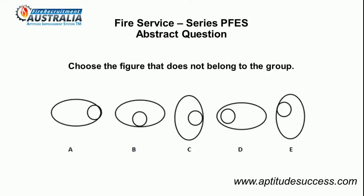FIRE SERVICE SERIES PFES Abstract Question. The patterns below include circles and ovals. Choose the figure that does not belong to the group.